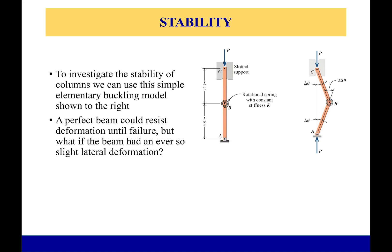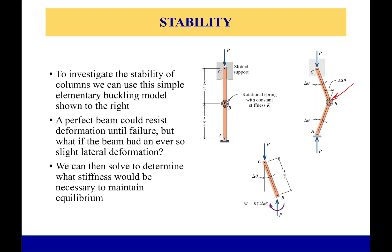If this column is not going to completely fail, that spring right there is going to have to resist the moment being caused by these two forces pushing on it. Because there is a force and there's a distance, and if I have a force times a distance I've got a moment. If that spring can resist that we're good; if it can't, it's going to continue to bend and eventually fail.